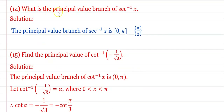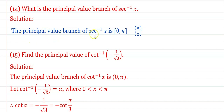What is the principal value branch of sec⁻¹(x)? The principal value branch of sec⁻¹(x) is [0, π] − {π/2}.